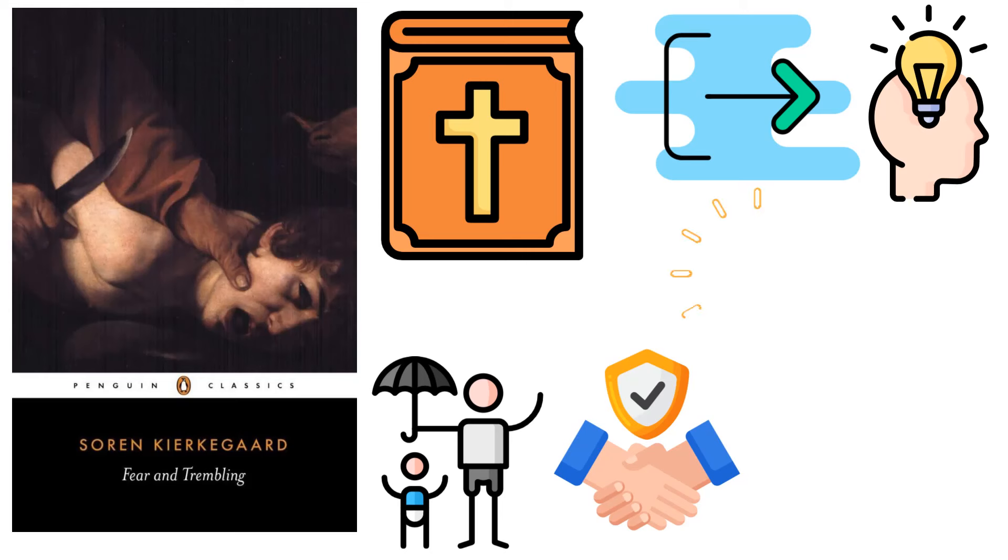The book opens with a preface in which Kierkegaard, as Johannes de Silentio, presents the reader with the current condition of philosophy and his disagreement with Hegel's system.